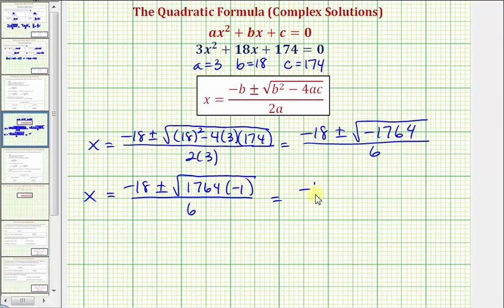So we have negative 18 plus or minus 42i divided by 6. And we want to be careful simplifying here. We cannot just simplify the 18 and the 6.